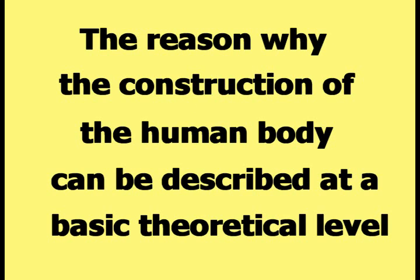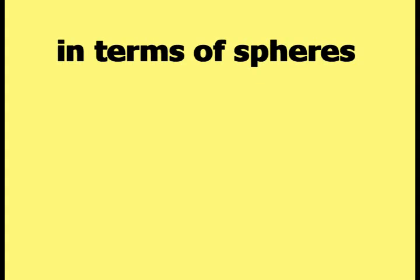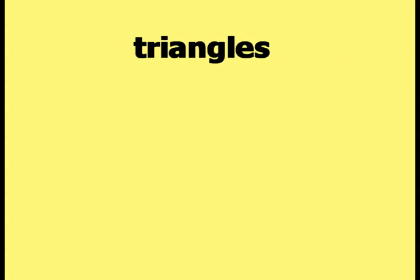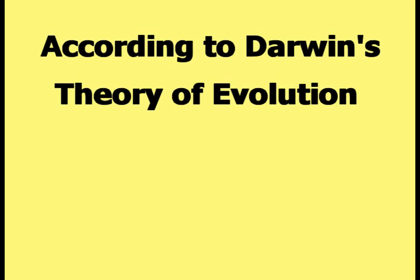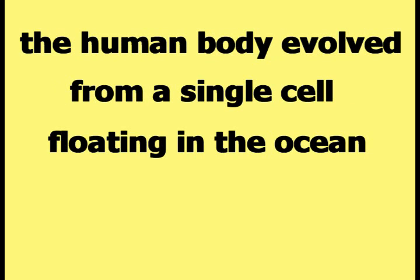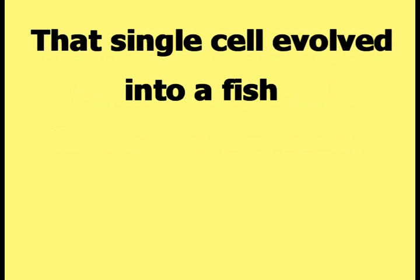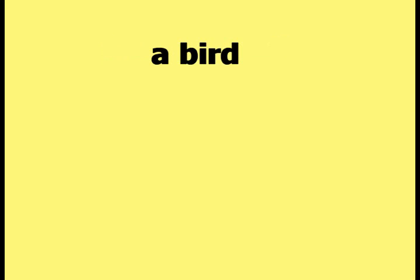The reason why the construction of the human body can be described using these five shapes is really very simple. According to Darwin's theory of evolution, the human body evolved from a single cell floating in the ocean. That single cell evolved into a fish, then an amphibian, then a reptile, a bird, an insect, a mammal, and finally into a human being.